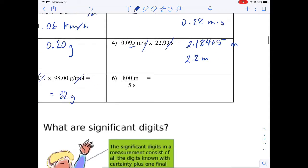And here I've got 0.8 divided by 5, so this is going to be 0.16 meters per second. But this is only one sig dig, so this is 0.2 meters per second.